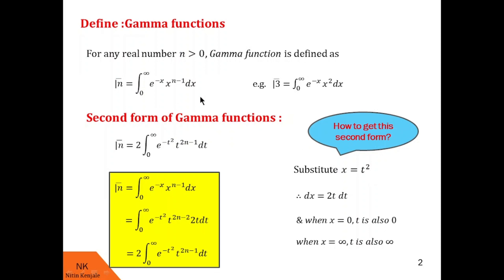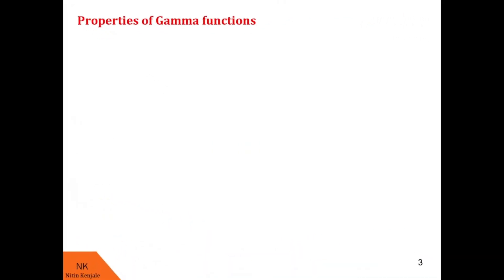I hope you understood these definitions of the gamma function. Now let us see some of the properties of the gamma function. In the very first property, we see that gamma of n plus 1 can be written as n into gamma of n, provided n is a positive real number.